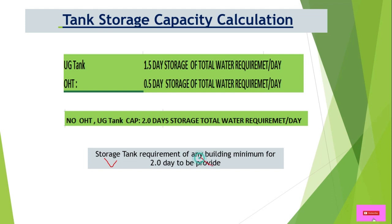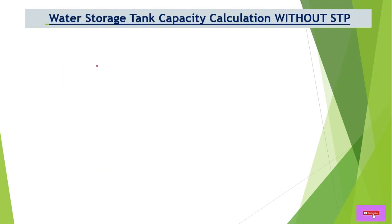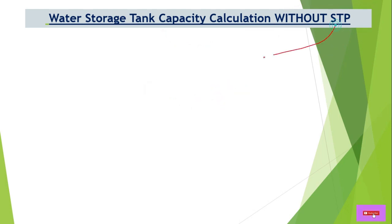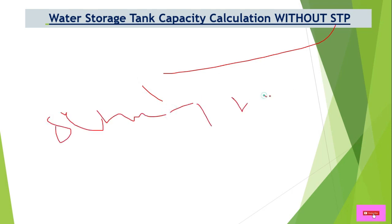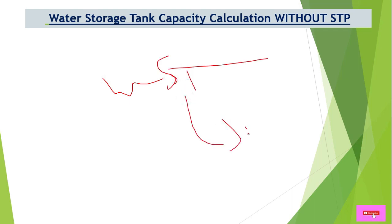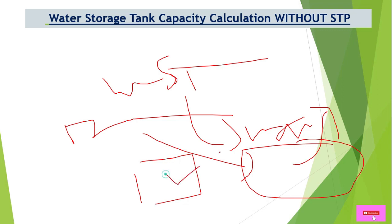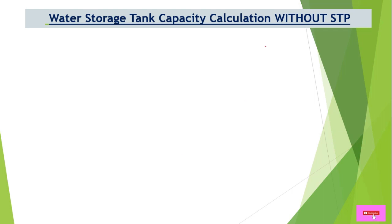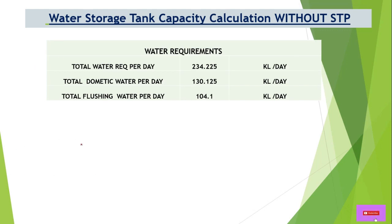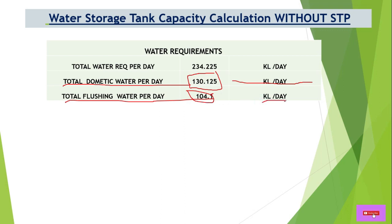We will calculate the water storage tank capacity both without STP and with STP. STP means Sewage Treatment Plant. Without STP means all wastewater is discharged to the municipal drainage — we will not reuse any wastewater. From our previous video, total domestic water supply is 130.125 KL per day, flushing water is 104.1 KL per day, and total is 234.225 KL per day.